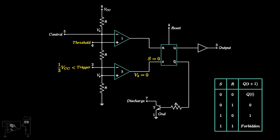Now suppose the threshold voltage goes above 2 by 3 VCC. The output of comparator 1 will be high and the input R will be high. This leads the flip-flop output to go low.